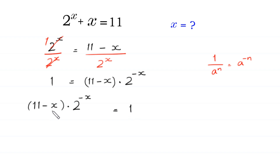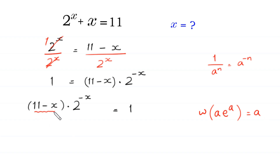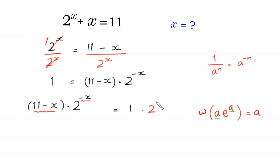Now we want to use the Lambert W function, that is: W function of a times e to the power a is equal to a. To use the Lambert W function, we must have the same expression in both positions. But for now, here we have negative x and here we have 11 minus x. So to make this negative x the same as this 11 minus x, we multiply both sides of this equation by 2 to the power 11.